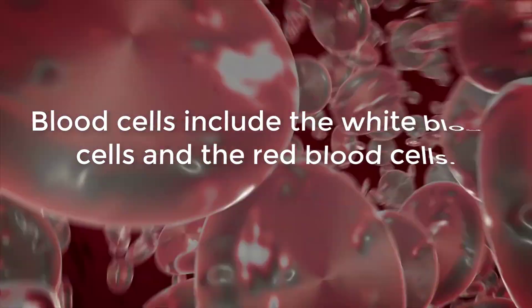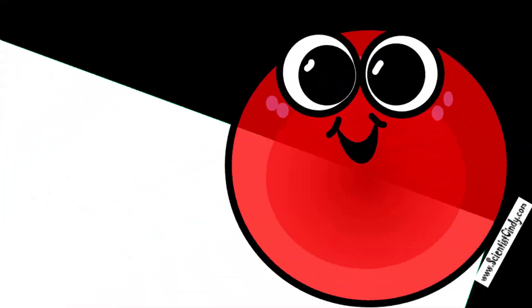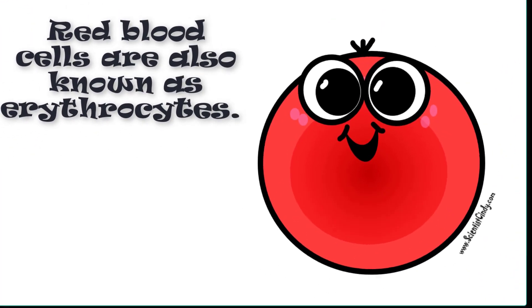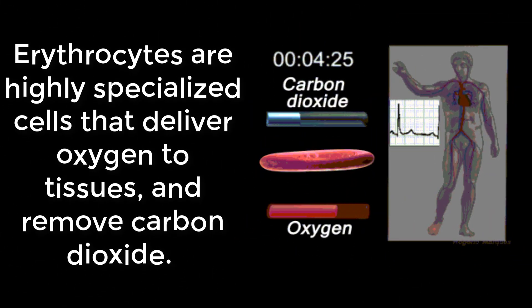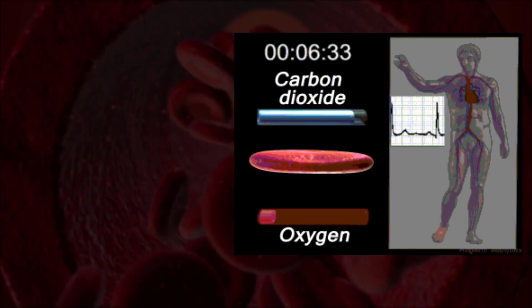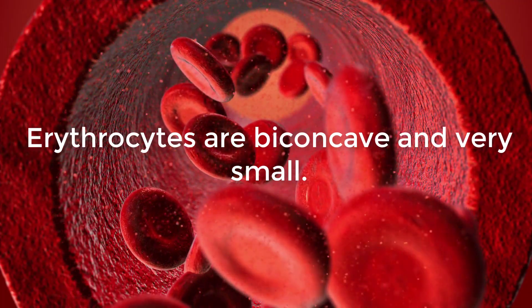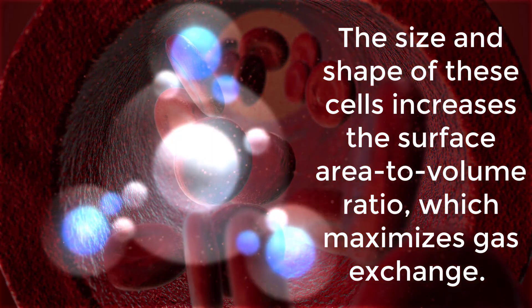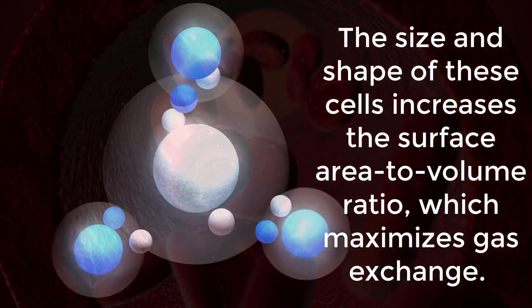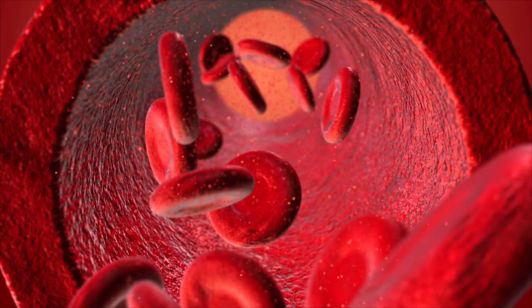Blood cells include white blood cells and red blood cells. Red blood cells are also called erythrocytes. Erythrocytes are highly specialized cells that deliver oxygen to tissues and remove carbon dioxide. They are biconcave and very small, and their size and shape increases the surface area to volume ratio, which maximizes gas exchange.